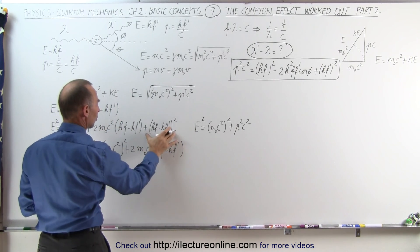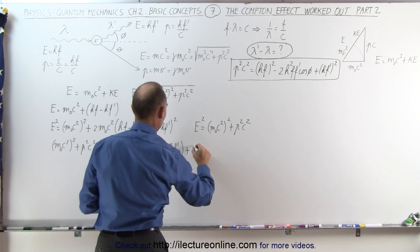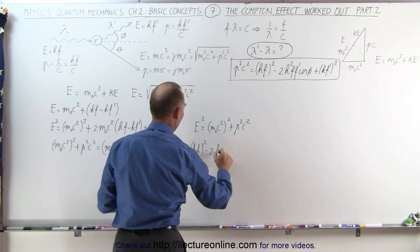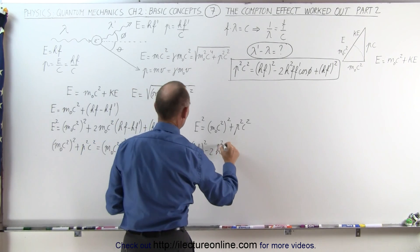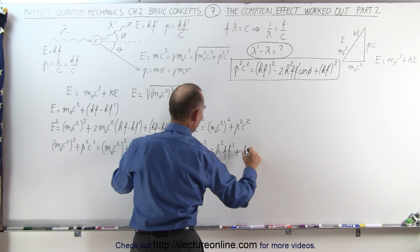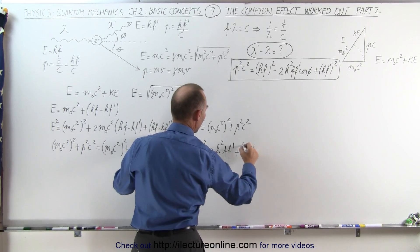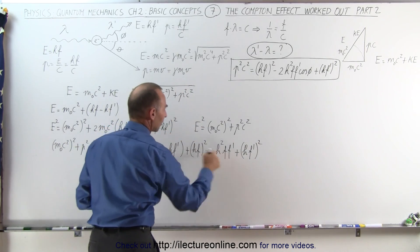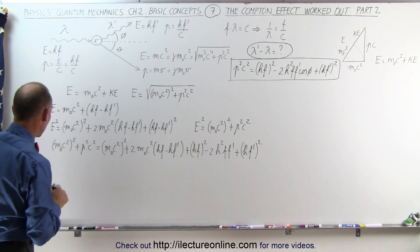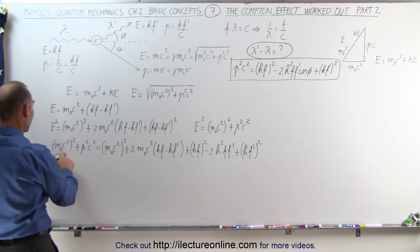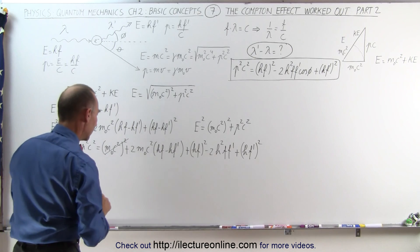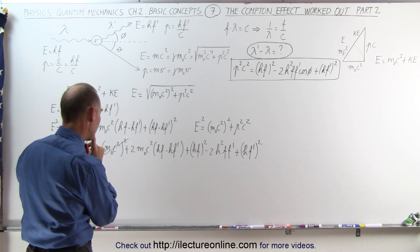After canceling, on the left side we have P squared C squared equal to this expression. And from the previous video, P squared C squared is equal to that expression, which means they must be equal to each other. The M sub-naught C squared squared terms cancel, leaving P squared C squared on the left side.